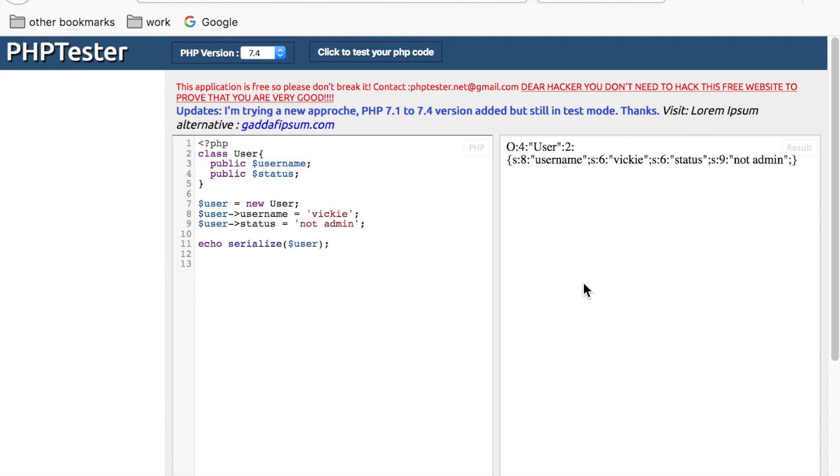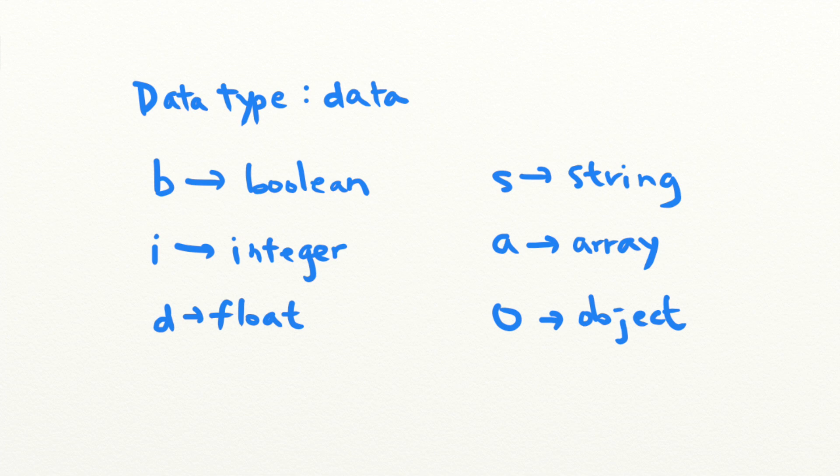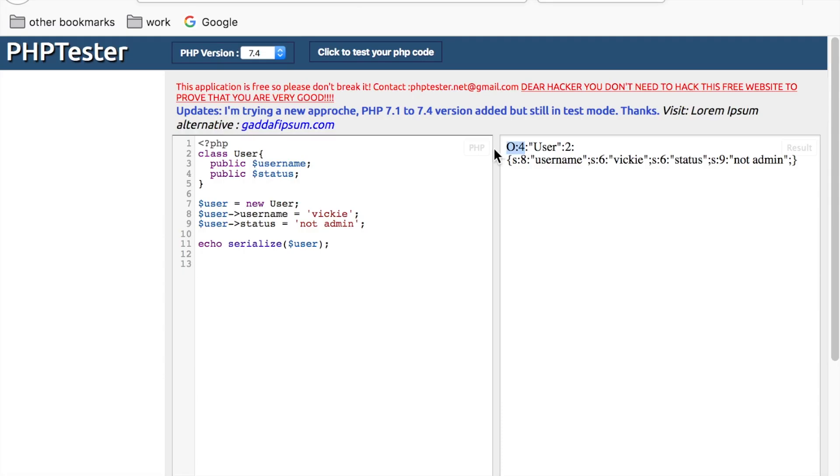Let's break this serialized string down. The basic structure of a PHP serialized string is data type data. B represents a boolean, i represents an integer, d represents a float, s represents a string, a represents an array, and finally, o represents an object. Our serialized string here represents an object of the class user.